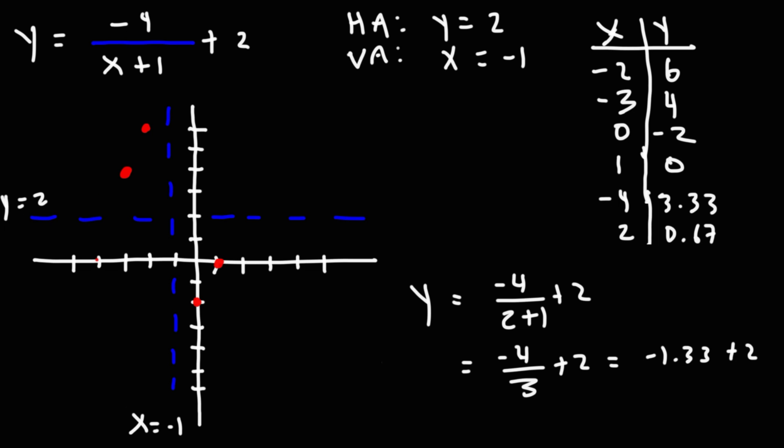So at negative 4, it's around 3.33, so just above 3. So it's over here somewhere. And when x is 2, it's about 0.67, so just under 1. So we can see that the graph looks something like this.